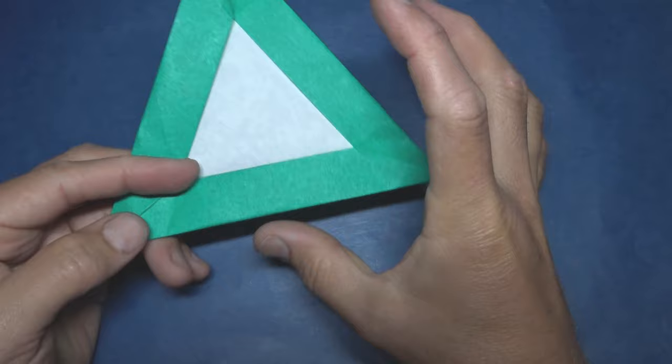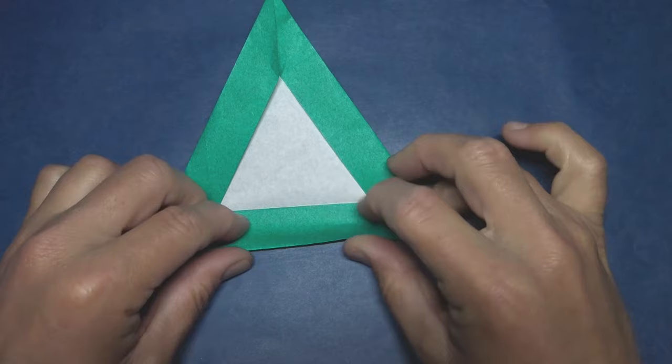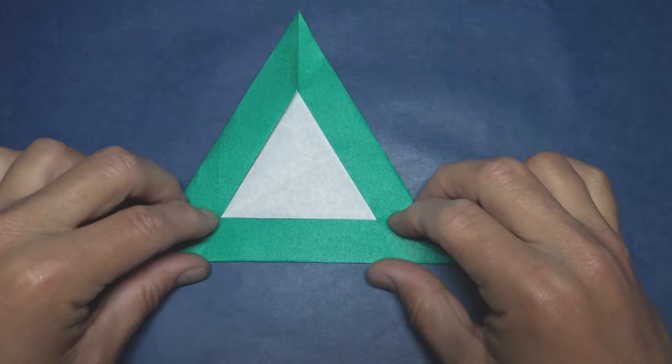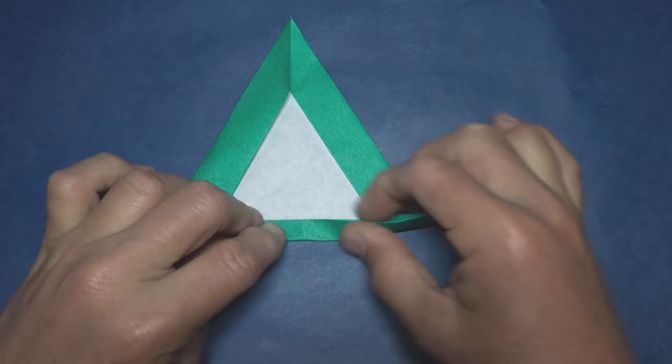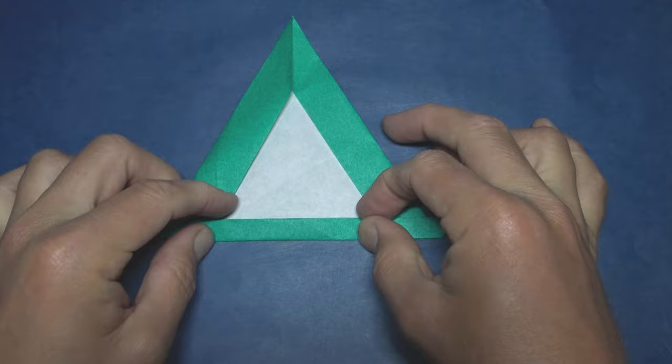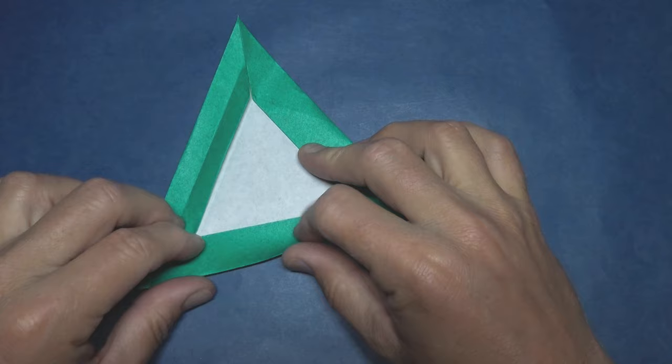Okay, now fold this edge to this edge and we're folding from here to here, from the edge to the edge. Hold the layers down so that they don't slide. And unfold and repeat that on the other two sides.